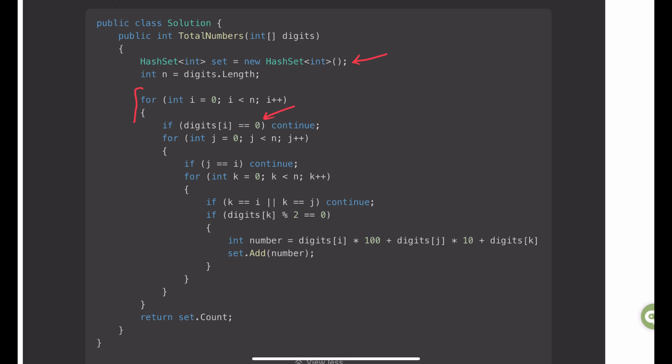The first check is to make sure that the digit that i is pointing at is not a 0. If it is, then I am not starting any of the nested iterations. I then initialized another nested iteration for the pointer j.